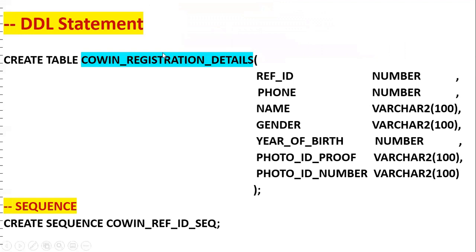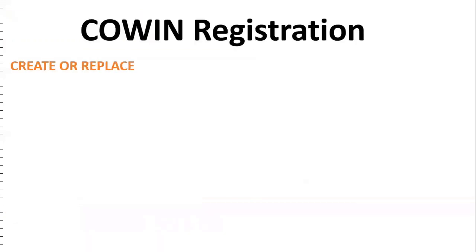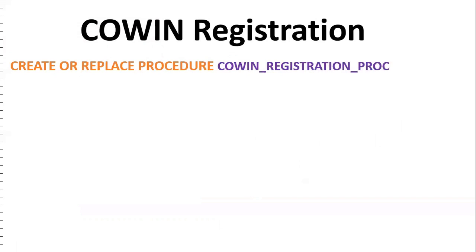To solve this requirement, we need one table to capture the details — covin_registration_details. It has fields: reference_id, phone number, name, gender, year of birth, photo ID proof, and photo ID number. For the reference_id, we create a sequence named covin_ref_id_sequence.